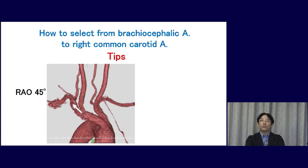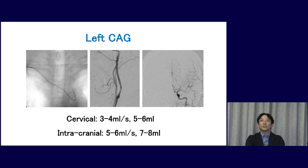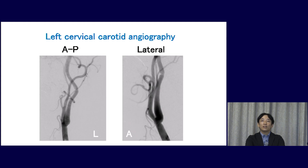We sometimes feel that the selection of the right CCA from the brachiocephalic artery is difficult. There is an important tip. This 3D image is a right oblique view. The right carotid artery and right subclavian artery can be distinguished because the right CCA is always branched in the anterior direction, whereas the subclavian artery is always branched in the posterior direction.